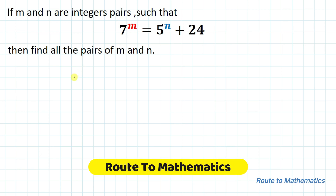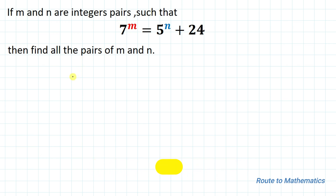Hello everyone, welcome to Root2Mathematics. In this video we are going to solve this interesting exponential equation. The given question is: if m and n are integer pairs such that 7 to the power m equals 5 to the power n plus 24, then find all the pairs of m and n.